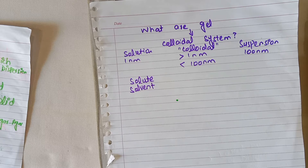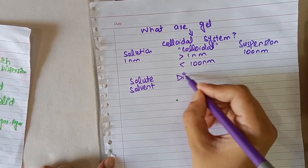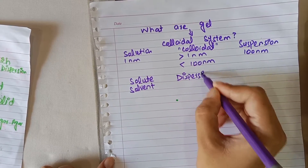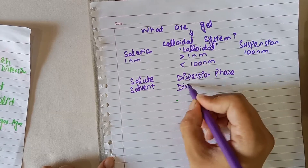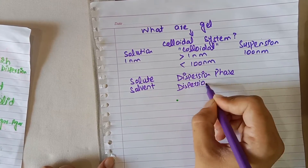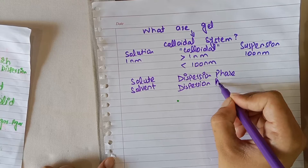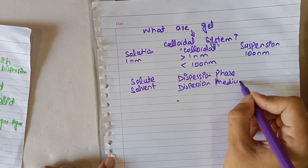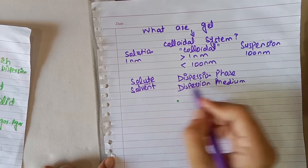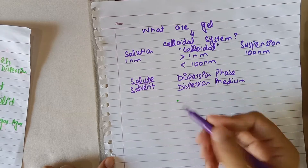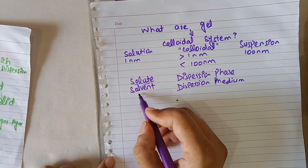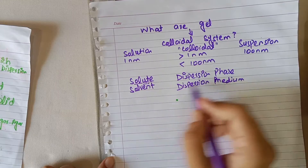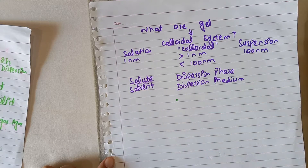Similarly, we can say that a colloidal system consists of two phases: one is the dispersion phase and another is the dispersion medium. The dispersion phase, similar to solute, is the phase present in small concentration. The dispersion medium, similar to solvent, is the phase present in large concentration.